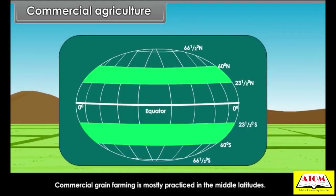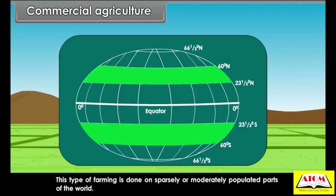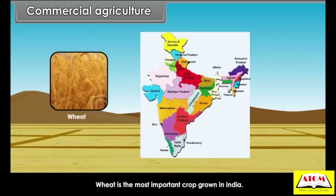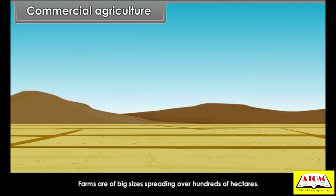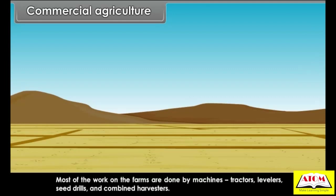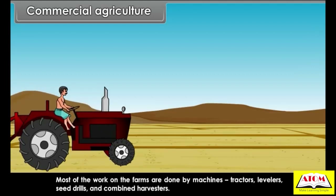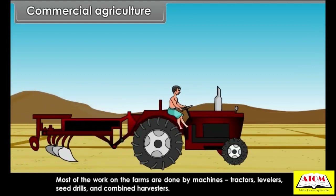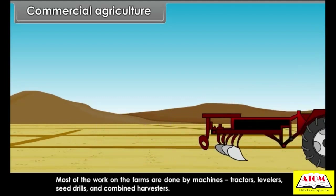Commercial grain farming is mostly practiced in the middle latitudes, in sparsely or moderately populated parts of the world. Wheat is the most important crop grown. Farms are of big sizes, spreading over hundreds of hectares. Most of the work on the farms is done by machines — tractors, levelers, seed drills and combined harvesters.